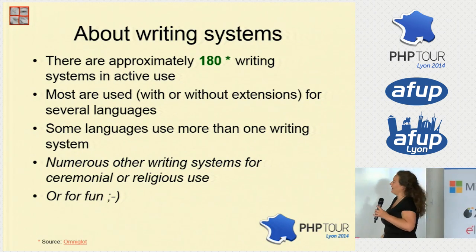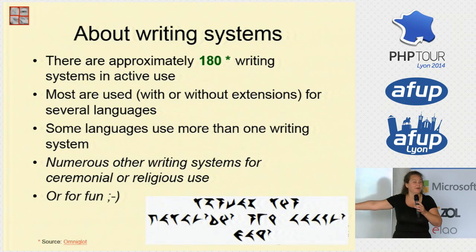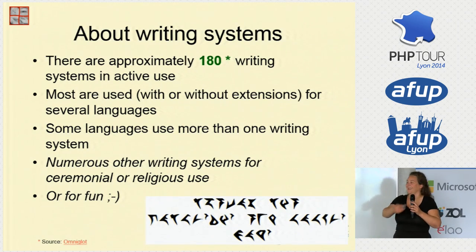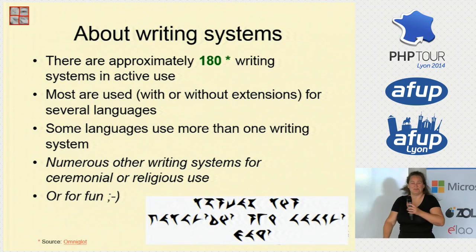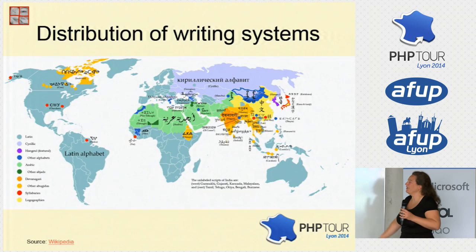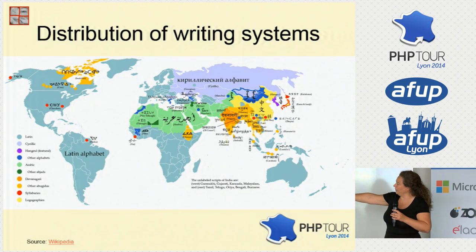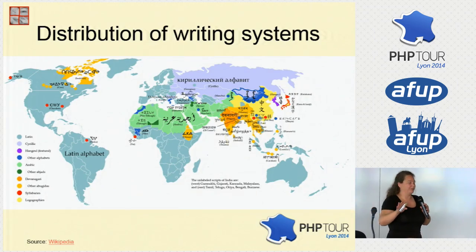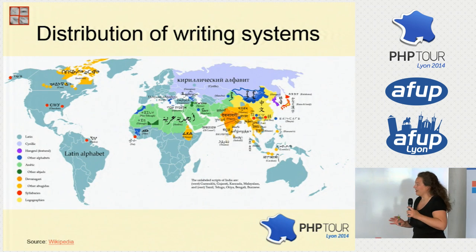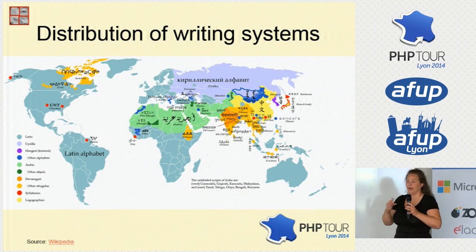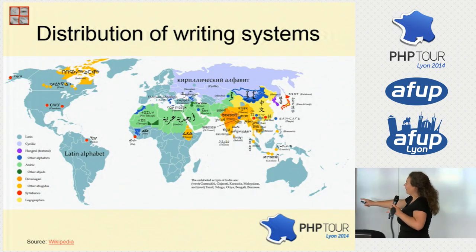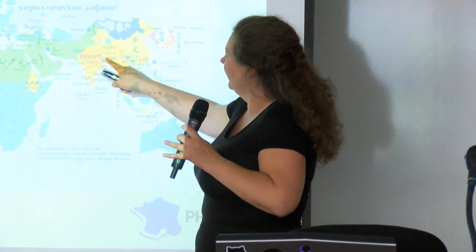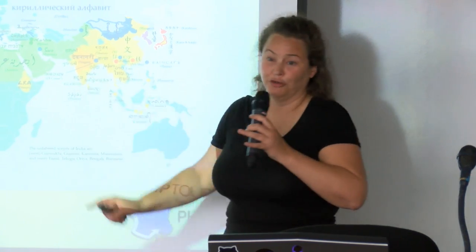There are some extra scripts which you won't really use that much for web pages, but you might use them for fun. If we look at the writing systems distribution, you can see that all the blue is Latin but with some variations — in Africa there are characters you wouldn't recognize here, but they're still part of the extended Latin alphabet. But there are massive parts of the world where different writing systems are in use.